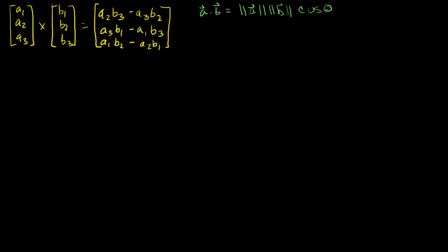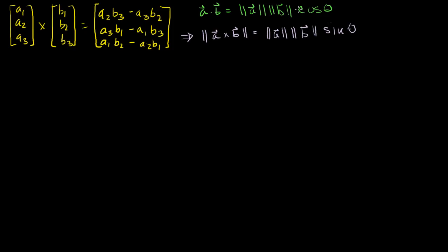We're going to start with this definition of a cross product in R3 — the only place it's really defined — and this result, and we want to get to the result that the length of the cross product of two vectors is equal to the product of each vector's lengths times the sine of the angle between them. This shows they're two sides of the same coin: dot product has cosine, cross product has sine.